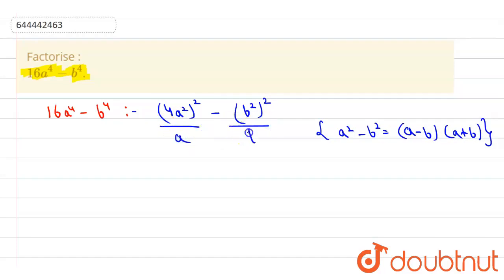This is a and this is our b. Put in this formula. So we will get 16a^4 - b^4, which is equal to (4a² - b²) in a bracket and in another bracket (4a² + b²).